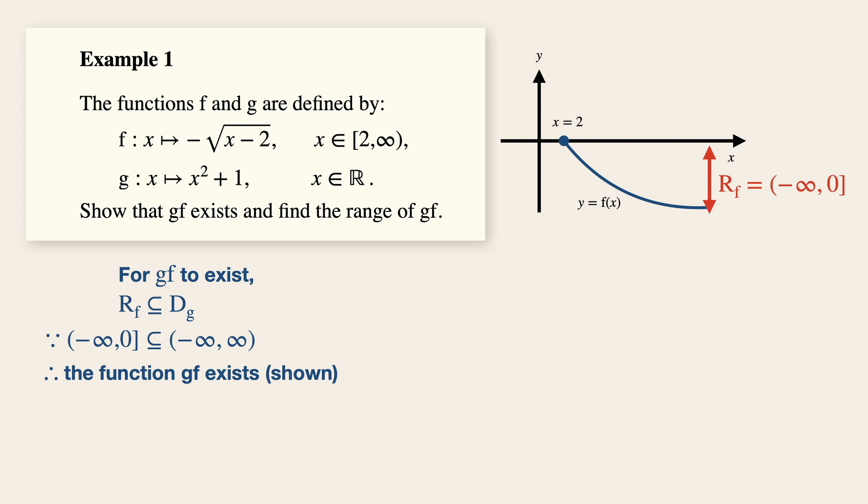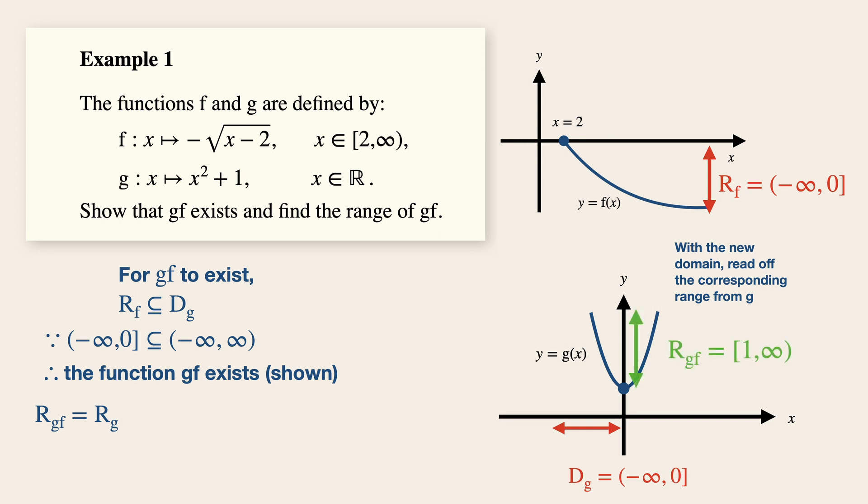Now to find the range of GF we first need to sketch the graph of G. The range of GF is simply the range of G. But under a certain condition, the condition relates back to the first part over here, where the range of F now becomes the new domain of G. And with that restricted domain of G, simply read off the corresponding range from the graph of G itself. Thus we write over here when we restrict the domain of G to the range of F. And this is equals to inclusive one to infinity.